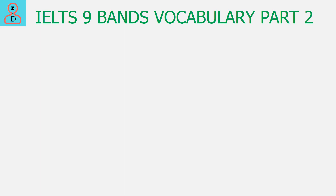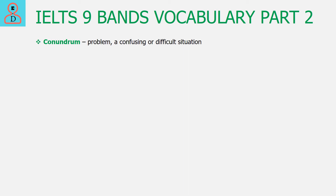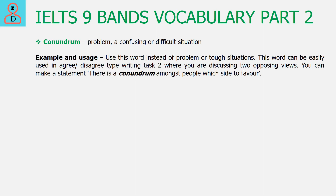The next word is Conundrum. Conundrum means a difficult problem or a confusing situation. This word can be frequently used in Agree/Disagree type writing task 2, as in this task you are discussing two opposing views. So you are in a confusing state of mind about which side to choose.